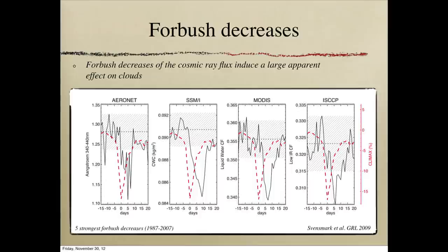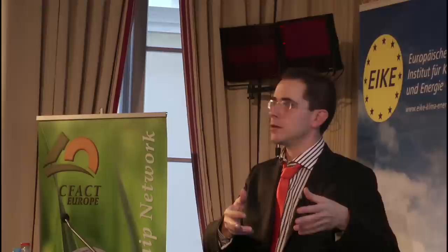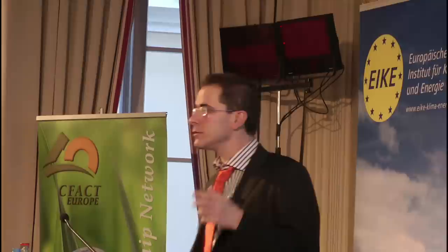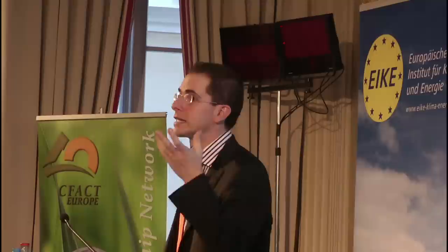Here's more evidence. These are Forbush decreases — several-days-long reductions that happen when a gust in the solar wind reduces the flux of cosmic rays reaching the Earth. Here in red you see the reduction in cosmic rays reaching the Earth. As a consequence, you can see that the number of aerosols over the oceans and three different independent cloud datasets all show a change or reduction in cloud cover on Earth in response to these Forbush decreases.